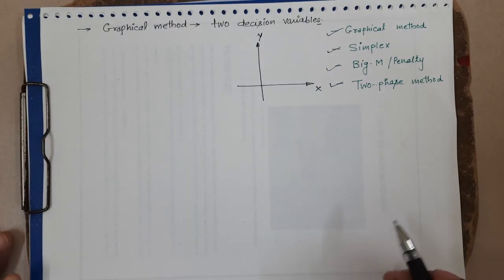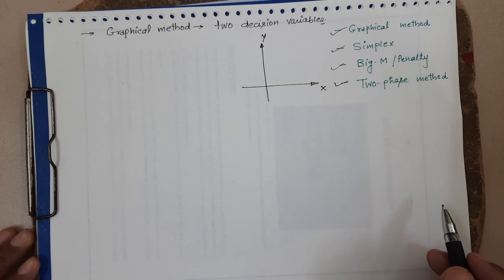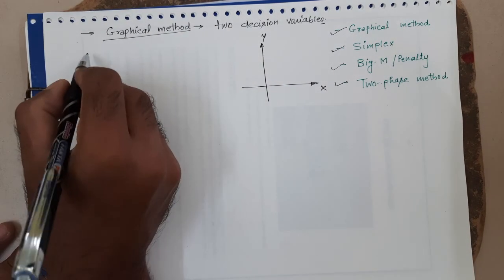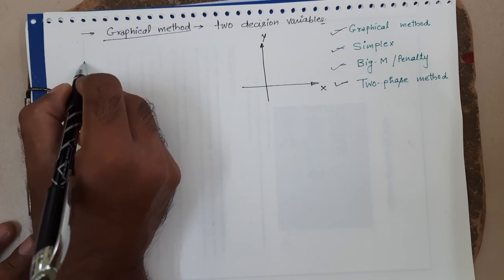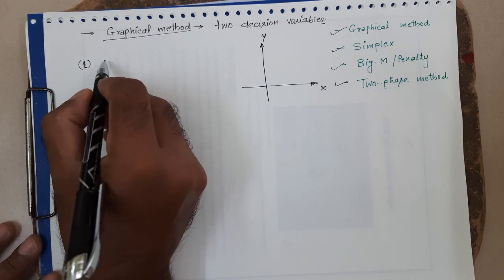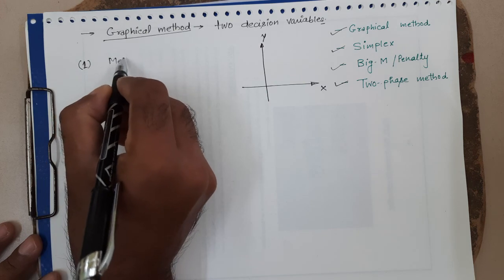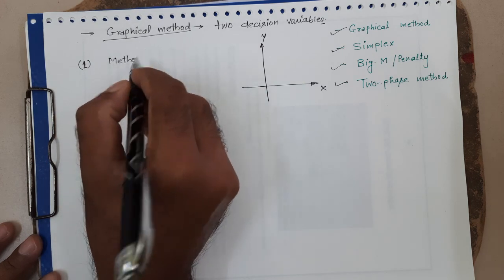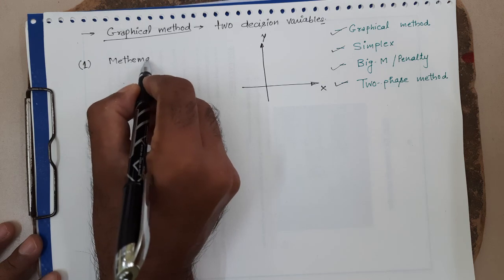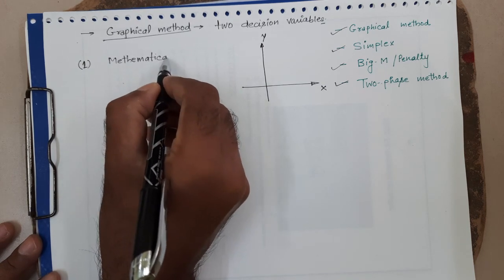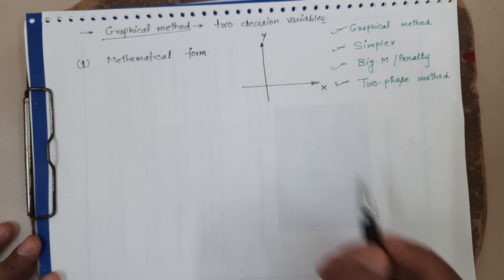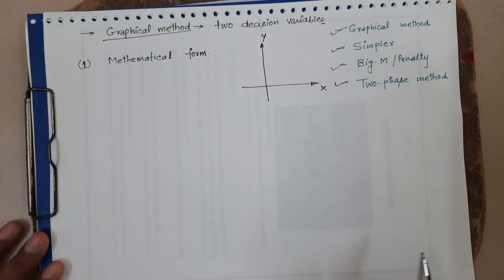Let us look at what the steps are involved in solving this problem by the graphical method. First, we write the problem in mathematical form — the wording of the problem is converted into mathematical equations. Then we draw the objective function, constraints, and non-negative constraints.